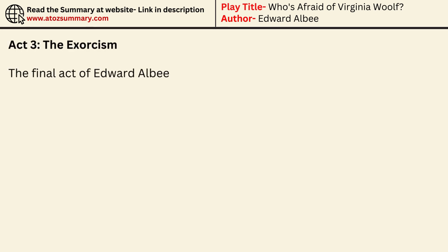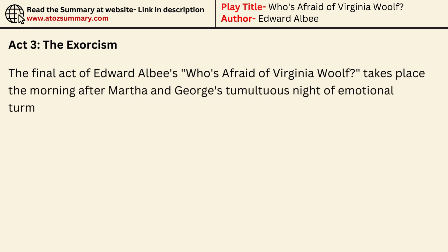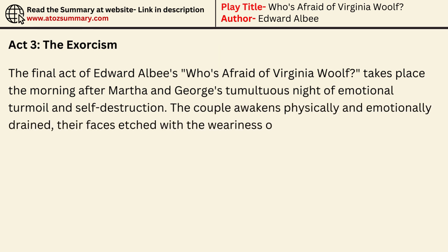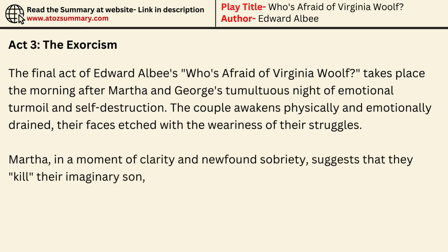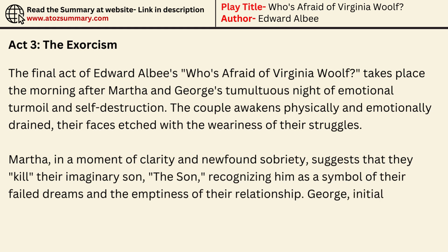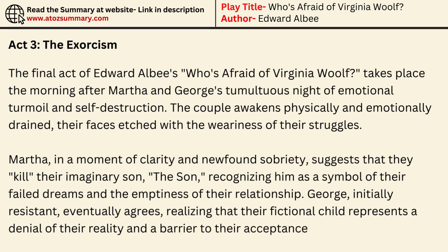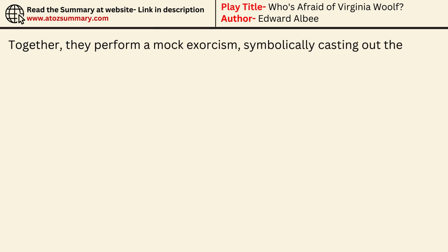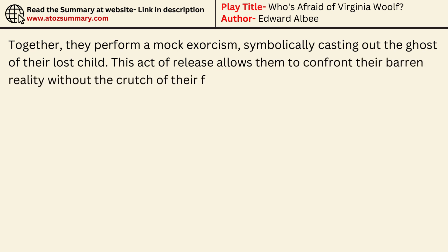Act 3, The Exorcism. The final act of Edward Albee's Who's Afraid of Virginia Woolf? takes place the morning after Martha and George's tumultuous night of emotional turmoil and self-destruction. The couple awakens physically and emotionally drained, their faces etched with the weariness of their struggles. Martha, in a moment of clarity and newfound sobriety, suggests that they kill their imaginary son, recognizing him as a symbol of their failed dreams and the emptiness of their relationship. George, initially resistant, eventually agrees, realizing that their fictional child represents a denial of their reality and a barrier to their acceptance of the truth. Together, they perform a mock exorcism, symbolically casting out the ghost of their lost child.